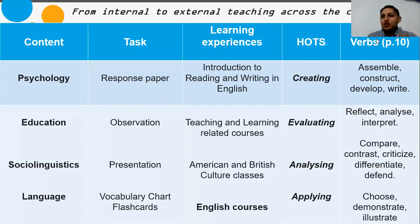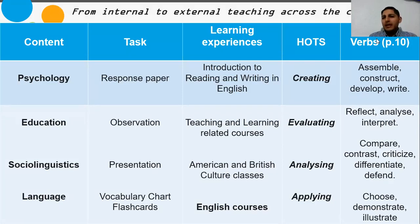This is a chart that shows a clear connection among content, tasks, learning experiences — that is courses — high order thinking skills, and the verbs in Bloom's taxonomy. For example, the response paper carries psychology-related content and has an impact on the course related to literacy skills, Introduction to Reading and Writing, and the main higher order thinking skill to develop will be 'creating.' The second task, observation, involves education with learning styles and strategies to impact the course of Teaching and Learning, with the higher order thinking skill being 'evaluating,' a stage of Bloom's taxonomy, the classification of higher and lower order thinking skills.